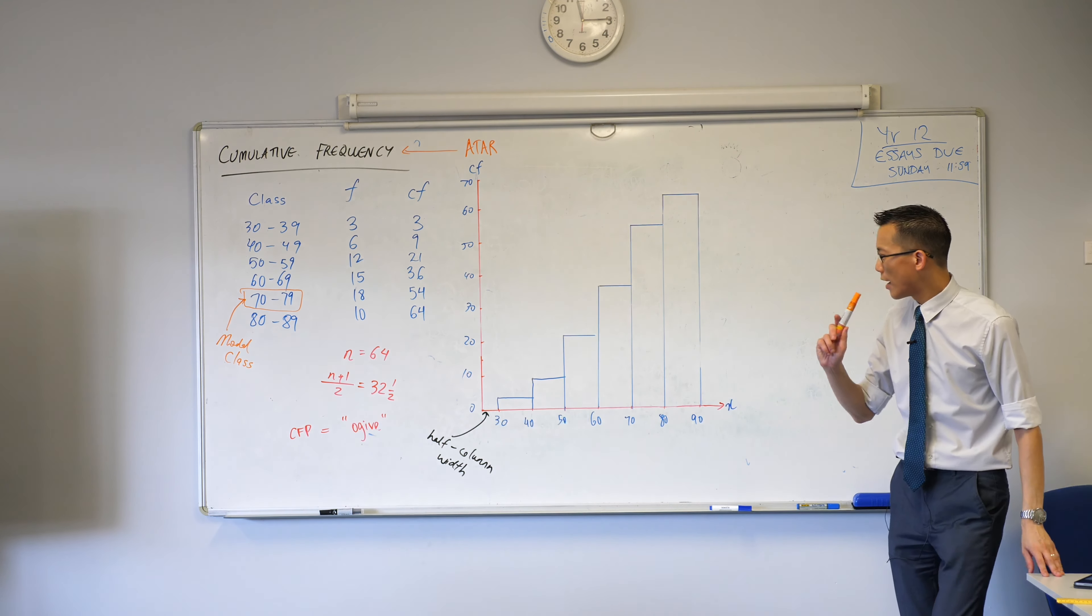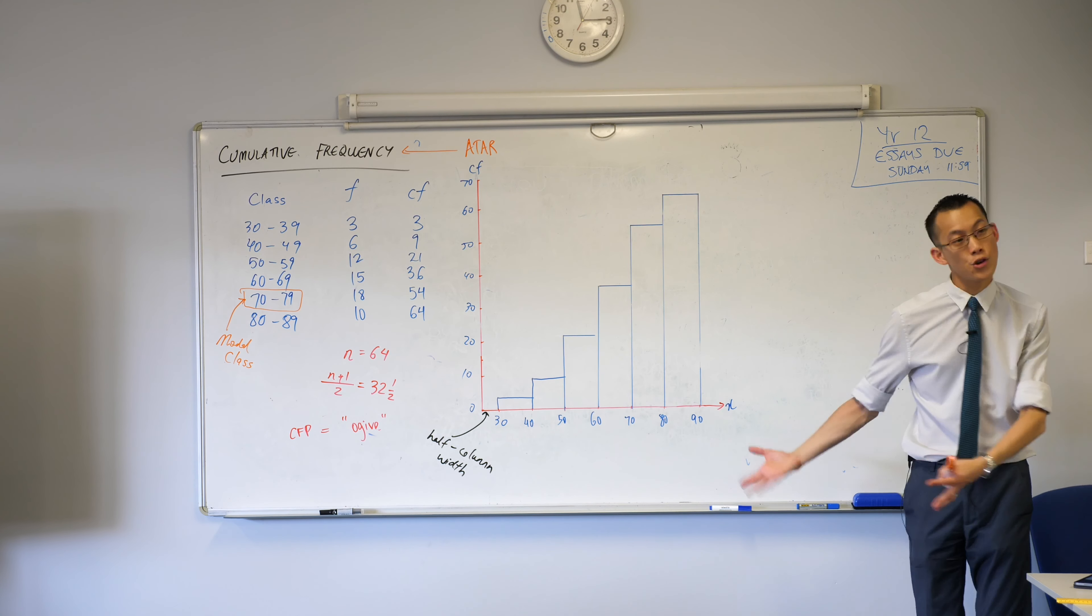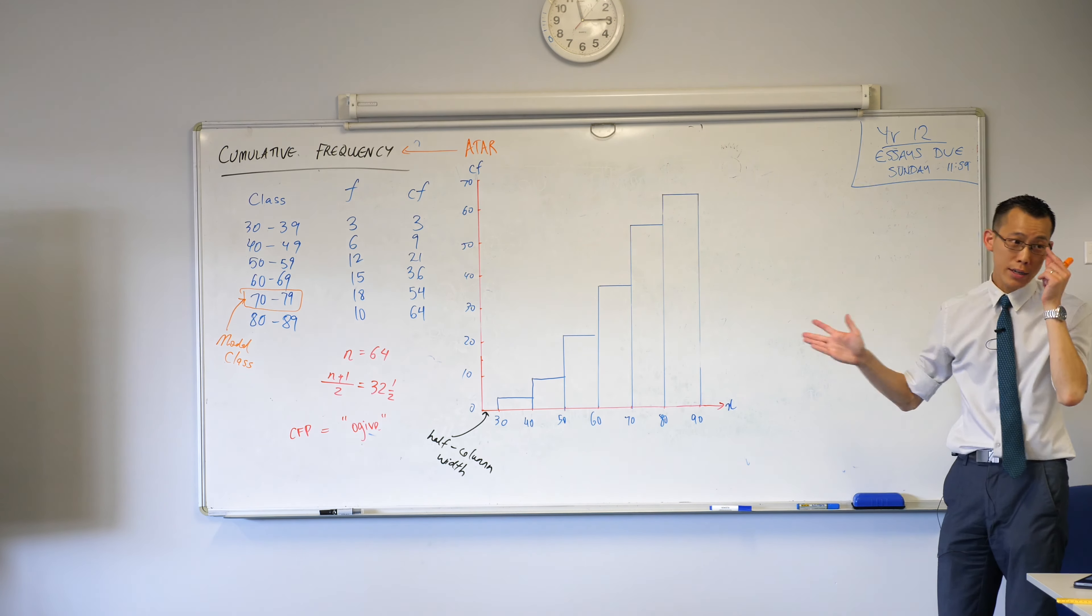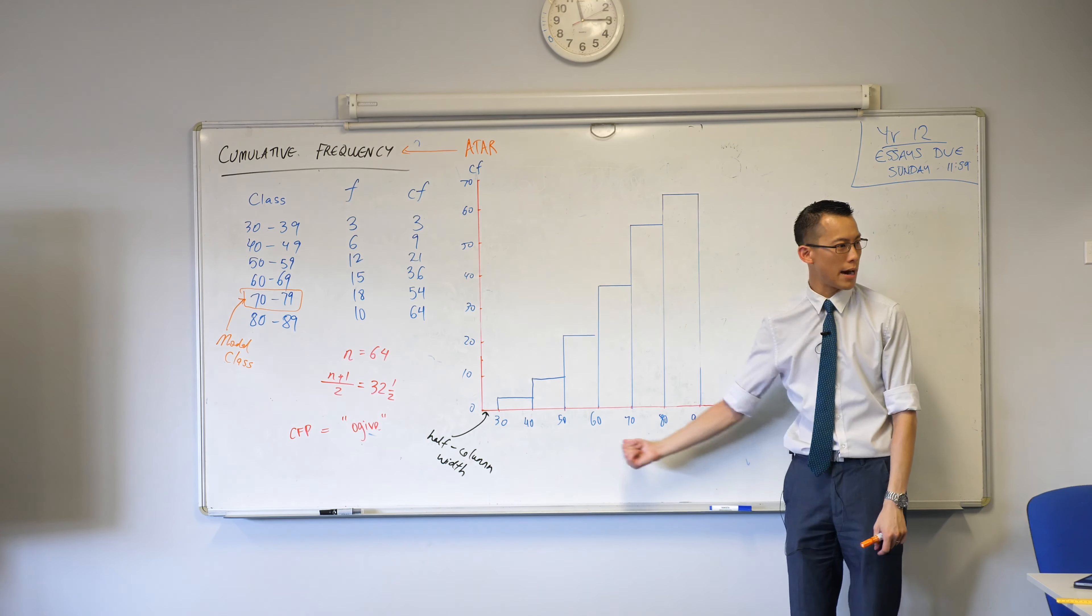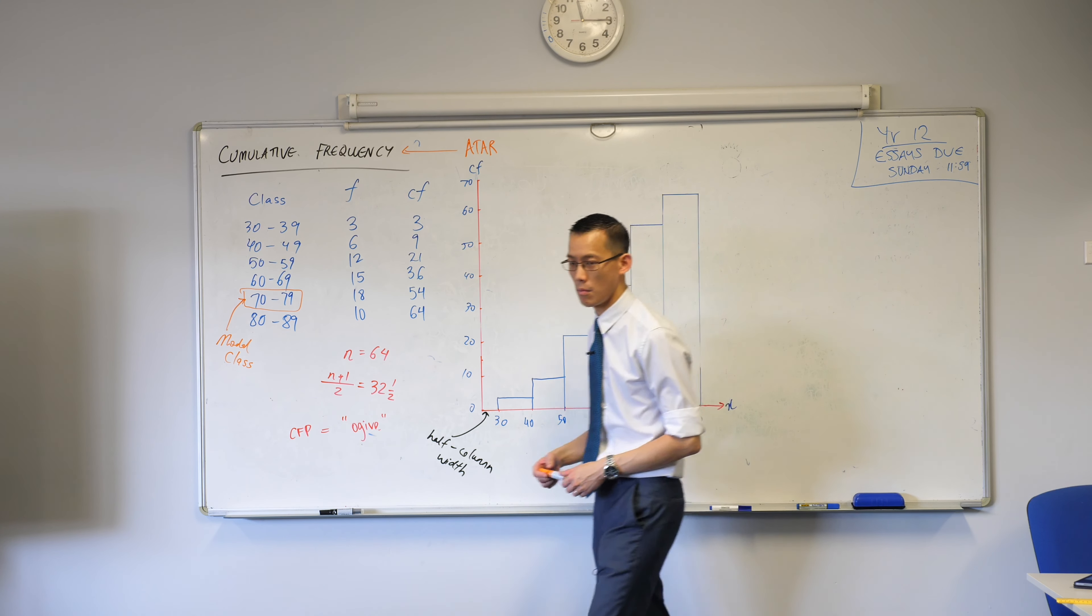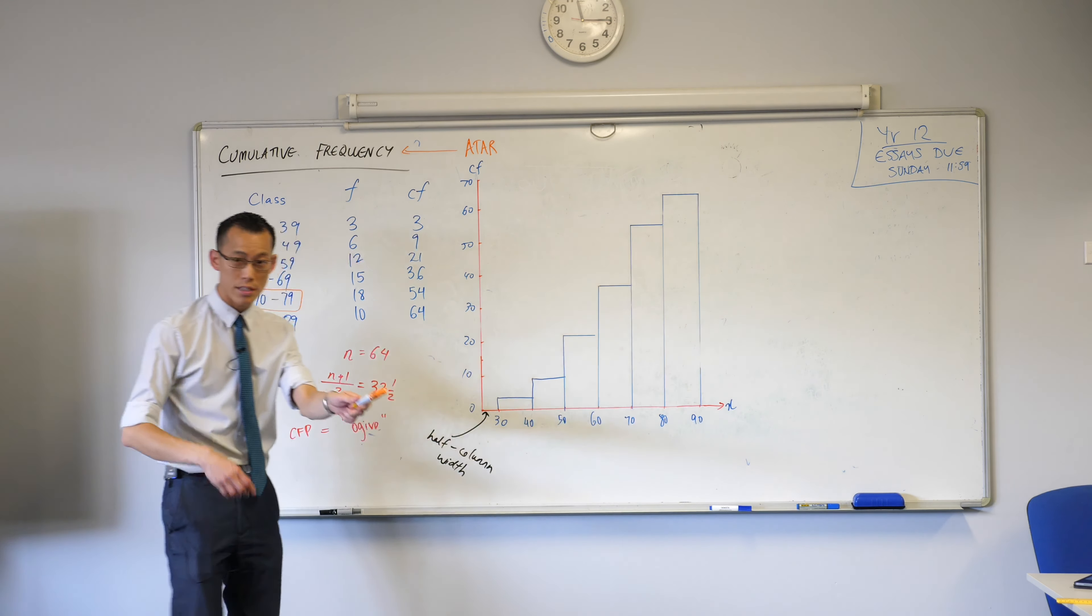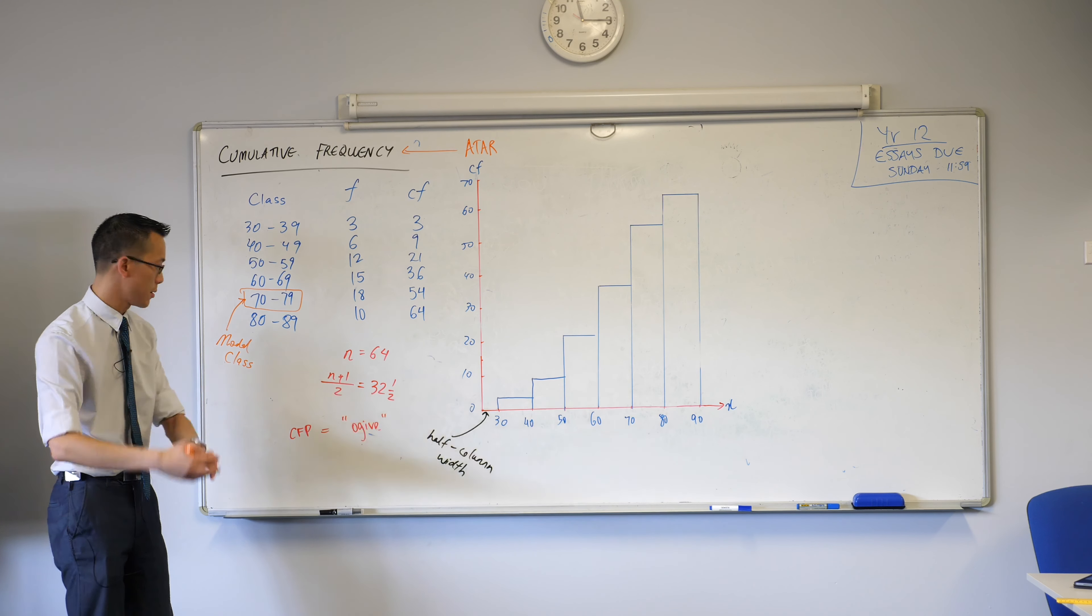Now, this part's also important. Some of you actually have already had a go with this question before. You graphed it. And you have a graph that looks very similar to this with some subtle differences. So, for example, have a look at my horizontal values here. What are they? Where did I get these numbers from? I got them from the classes. Importantly, they are the boundaries of the classes. Does that make sense?